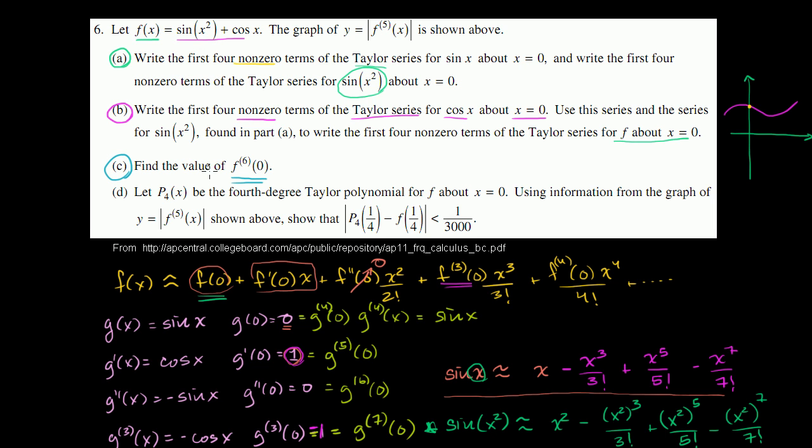But we have a big clue here. The fact that they made us find the first four terms of the Taylor series of f about x equals 0 tells us that there might be a simpler way to do this, as opposed to just taking the sixth derivative of this and evaluating it at 0.